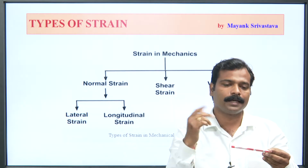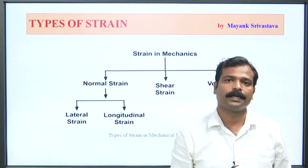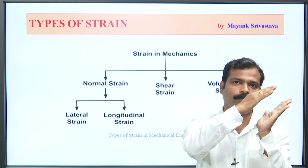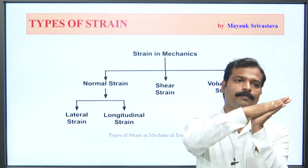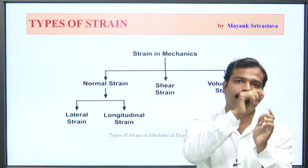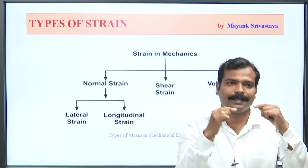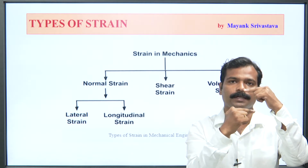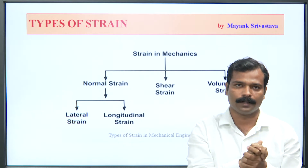But if we talk about shear strain, we need two parallel planes. The most important term is that the two parallel planes should be parallel, with forces applied in opposite directions, but non-aligned — meaning the force axes are not the same line. This is the most important term for shear strain.